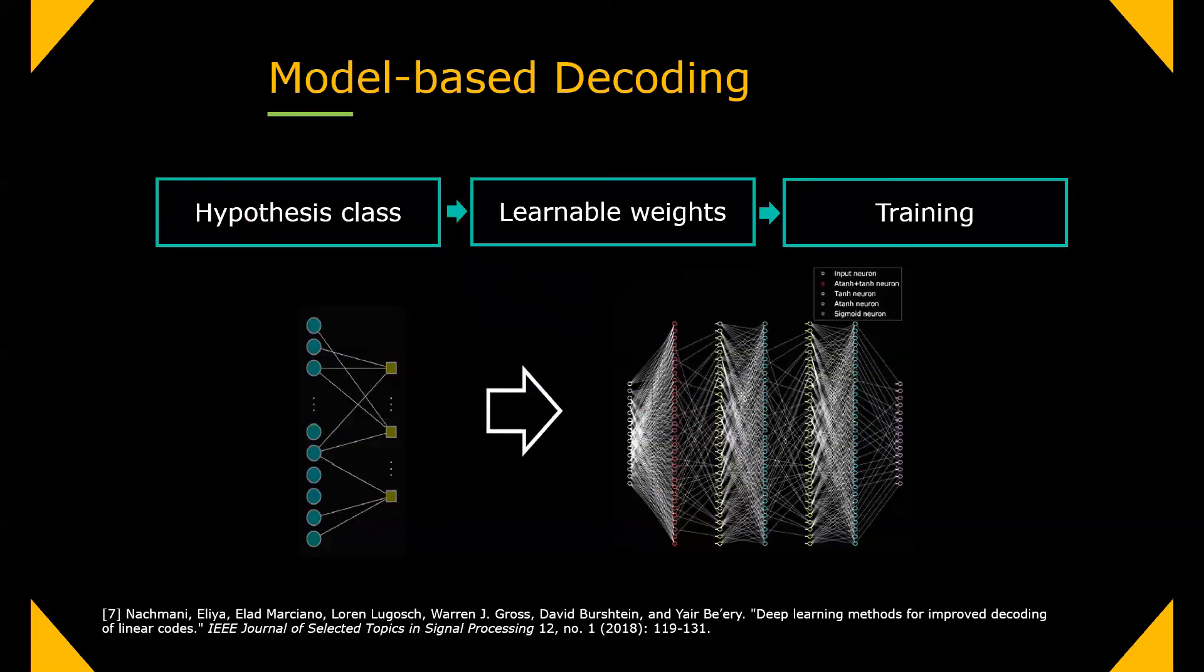So the model-based approach in machine learning-based decoding really thrived in the last couple of years. It is a recipe with several basic steps. First, choose your hypothesis class, meaning the actual decoder. Then, assign learnable weights on this decoder, providing flexibility to the rigid model. Finally, train this architecture end-to-end using a dataset collected from the channel and minimize some surrogate loss function.